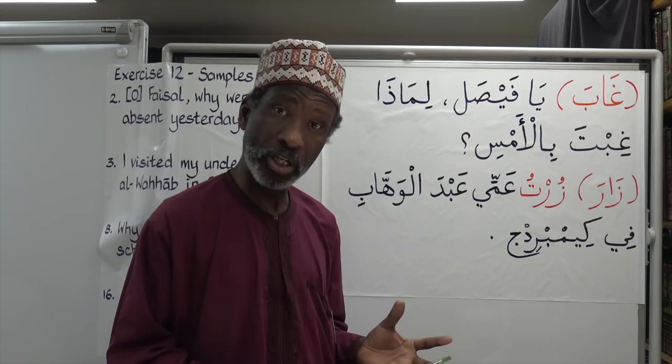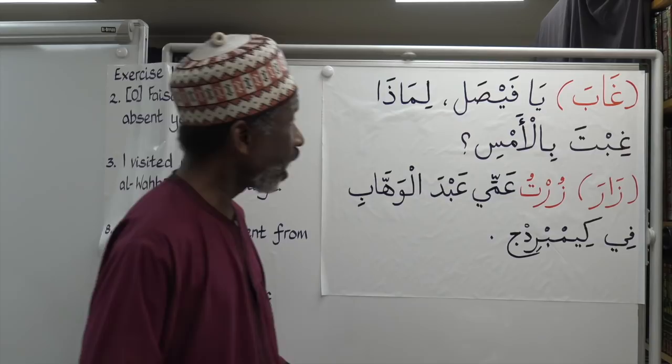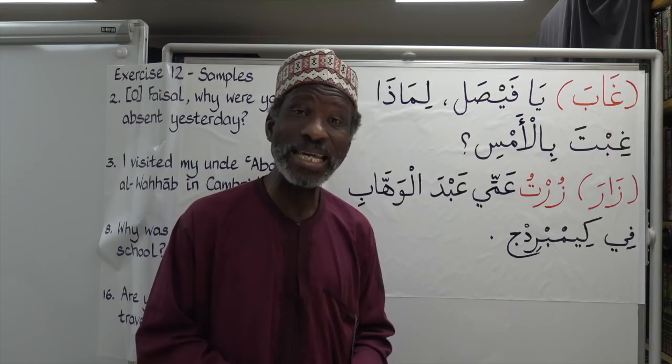We've learned about the family trees. Ammi means your paternal uncle. If it's your maternal uncle, it will be khal. So: Ya Faisal, limadha ghibta bil amsi? Zurtu ammi Abd al-Wahab fi Cambridge.